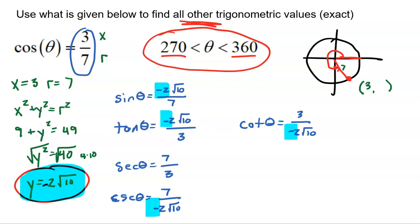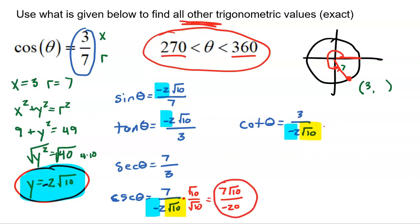Also remember: anytime you leave a square root in the denominator, rationalize it. For cosecant, multiply by √10 to get 7√10 over −20. For cotangent, multiply by √10 to get 3√10 over −20, since √10 times √10 is 10, times −2 is −20. That's the cleaner final answer without a square root in the denominator.